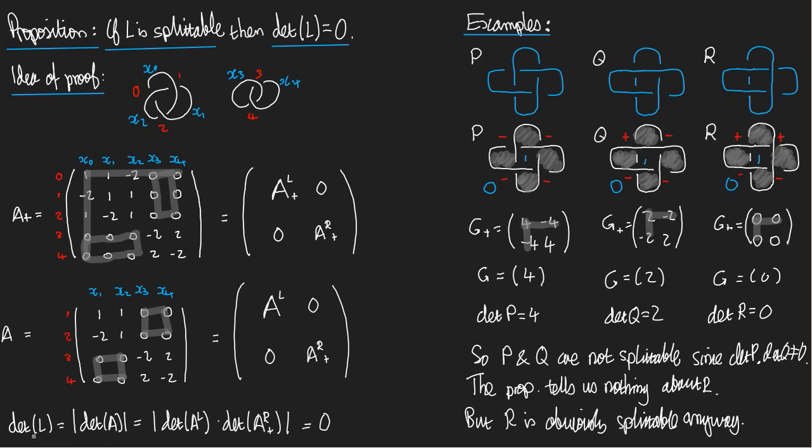Now let's work out the determinant of L. It's the absolute value of the determinant of A. Now A being a block matrix of this form, its determinant is just the product of the determinants of the blocks. So it's the absolute value of the determinant of A-L and the determinant of A-R-plus. But the determinant of A-R-plus is zero. Why is it zero? Because the sum of the rows is zero as we know, and so this factor is zero so the whole thing is zero.